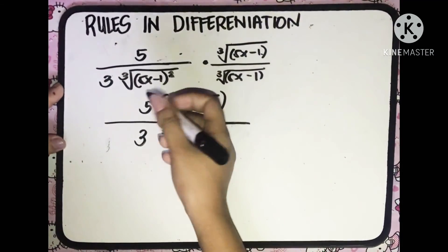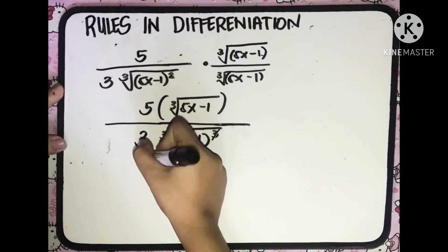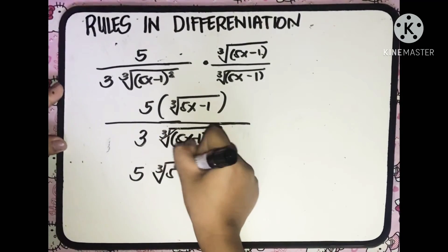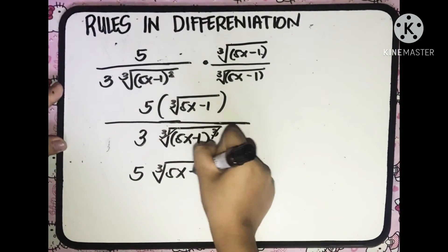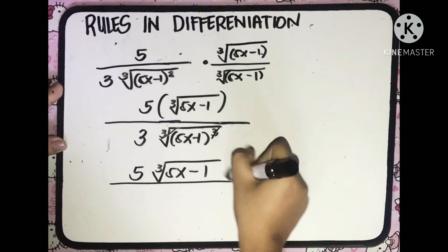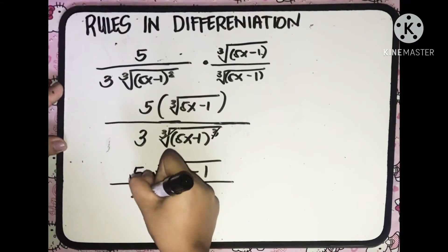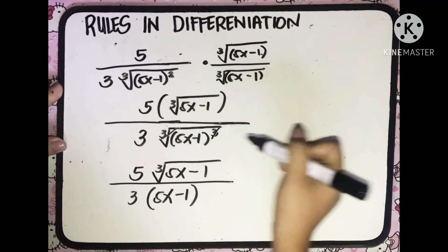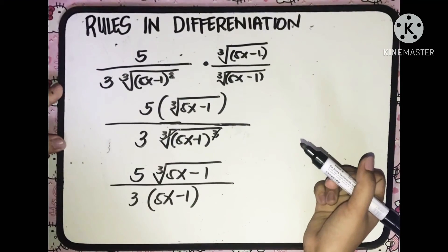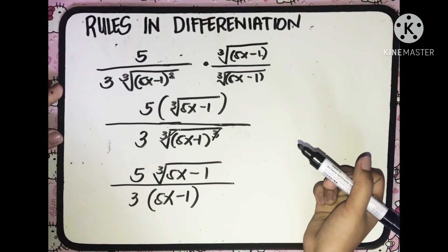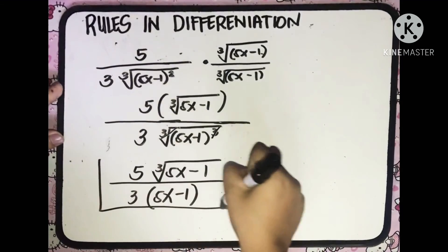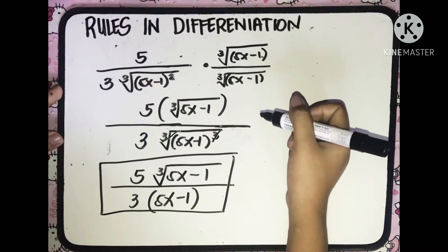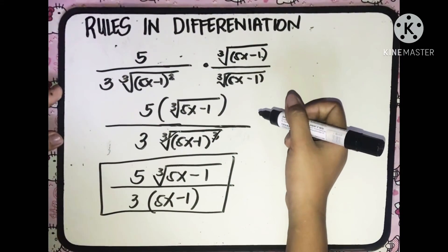Simplifying, just copy what is in the numerator. You don't need to distribute it further — this is the final answer. That is the derivative of the given function.